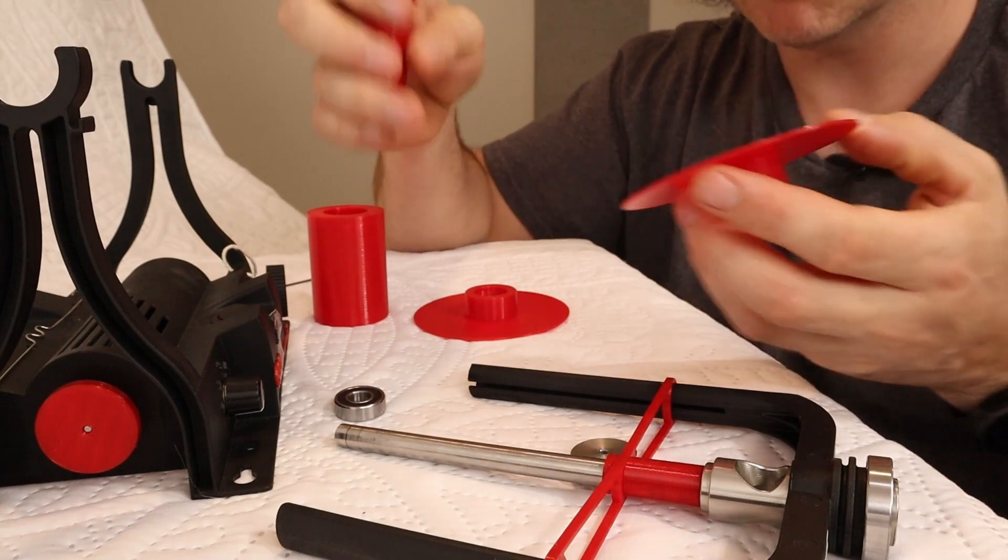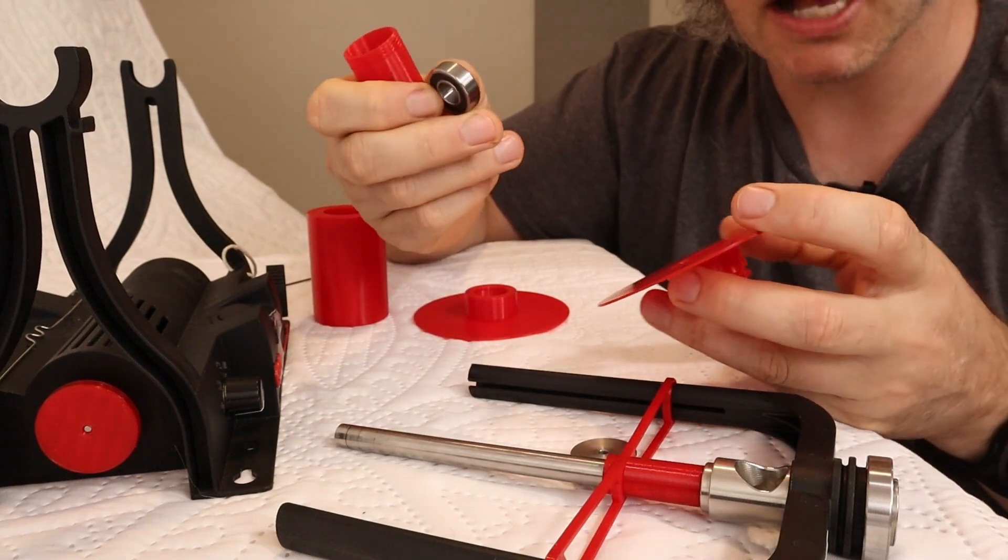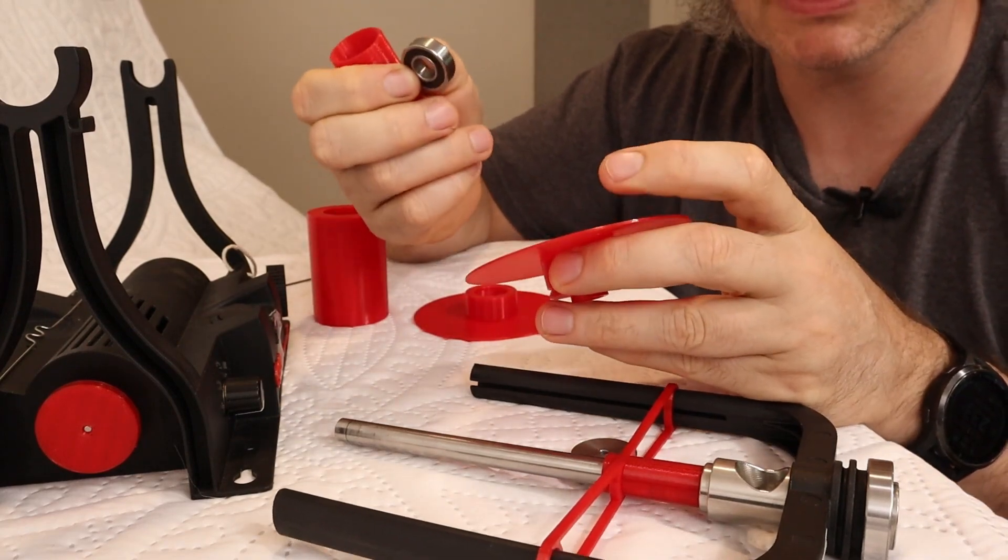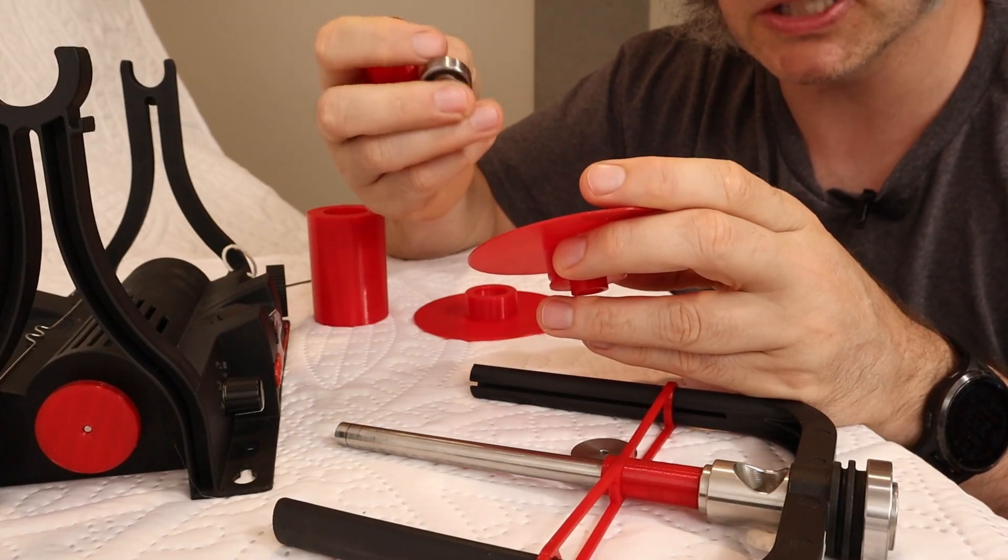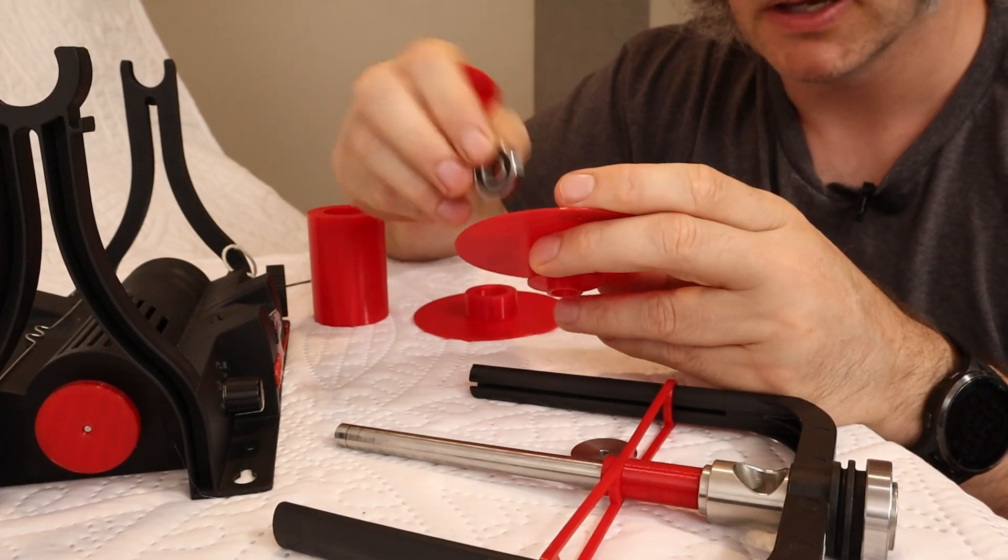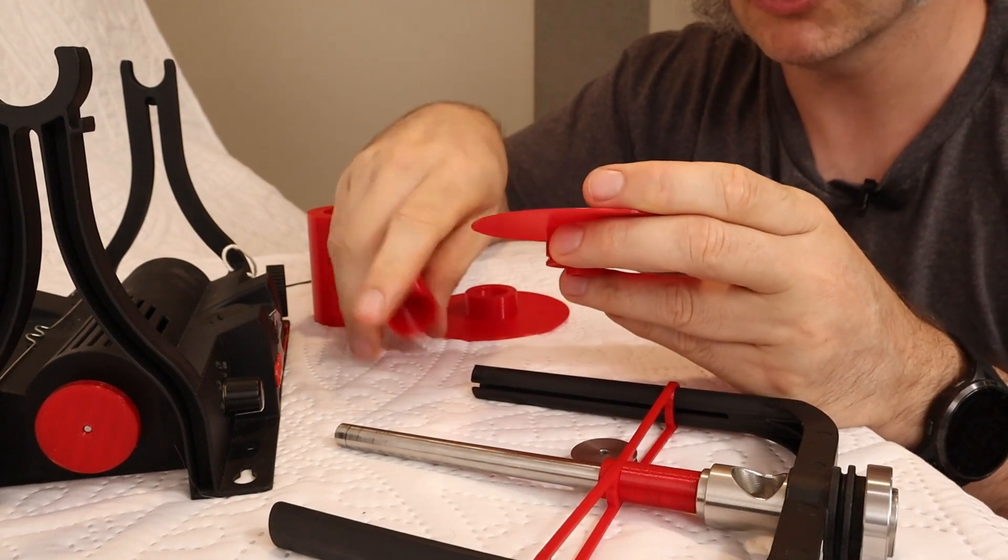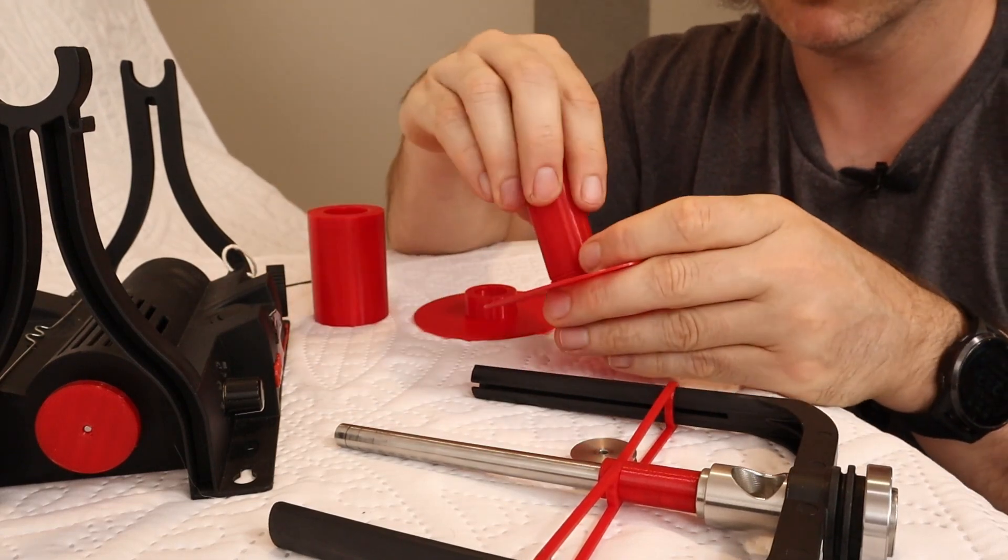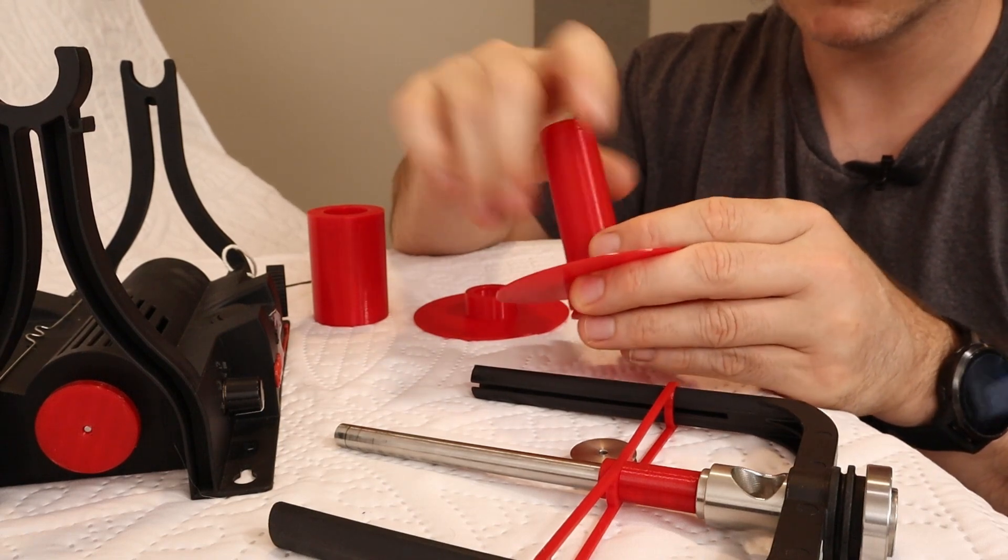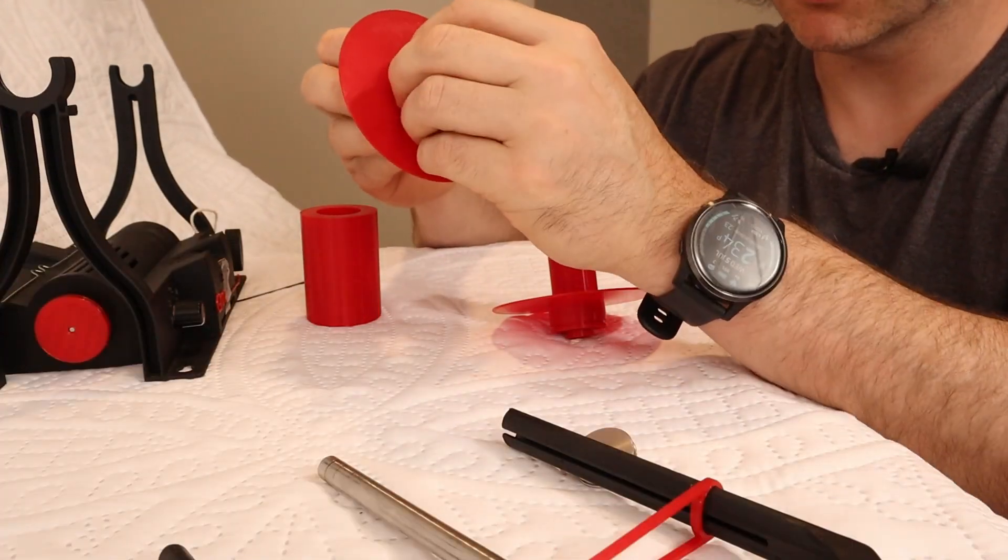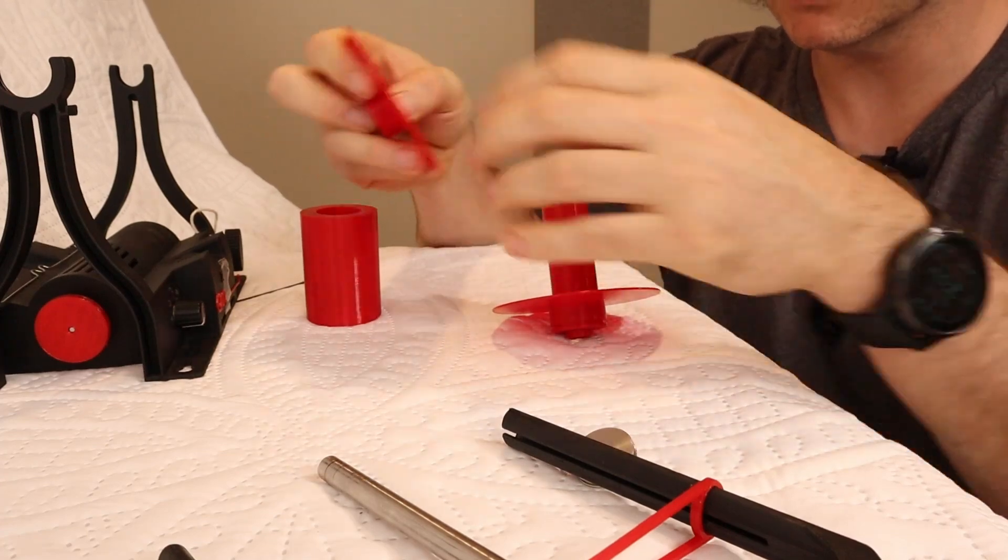So you're going to need some bearings. I'll have some links to where you can get extras in the show notes, but you can also take them out of your Electric Eel Wheel 6 bobbins. It's the same bearings that I use there. And you put one in here, then you start tightening that.